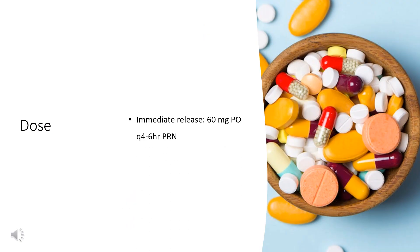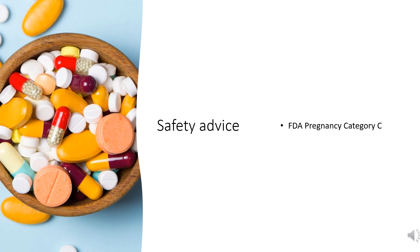For nasal congestion, the immediate release dose is 60 mg PO every 4–6 hours as needed. Extended release options are 120 mg PO every 12 hours, or 240 mg PO every 24 hours. For priapism (off-label), the dose is 60–120 mg PO.